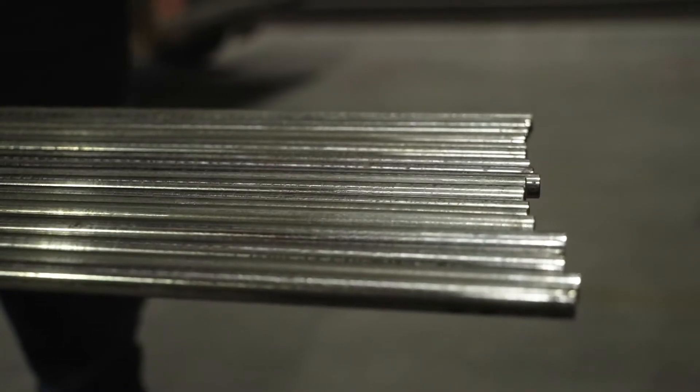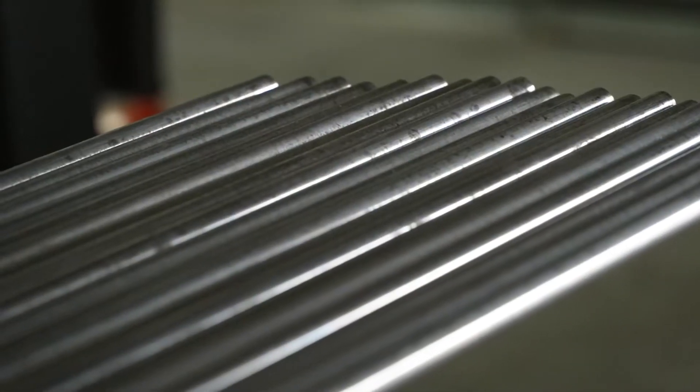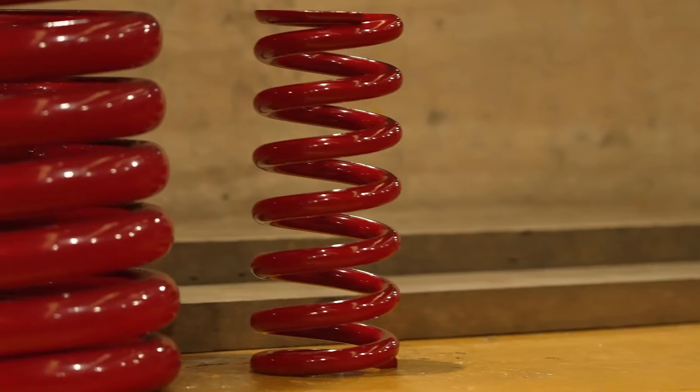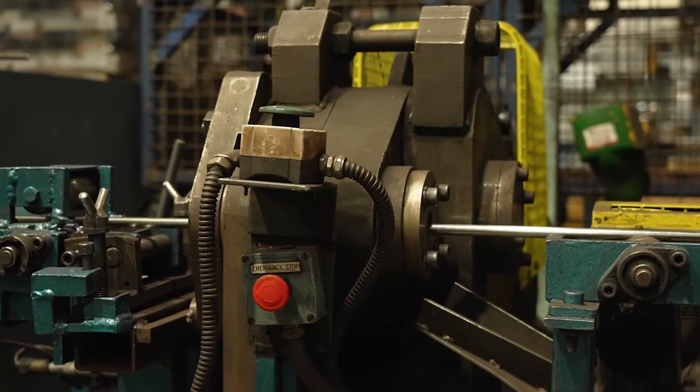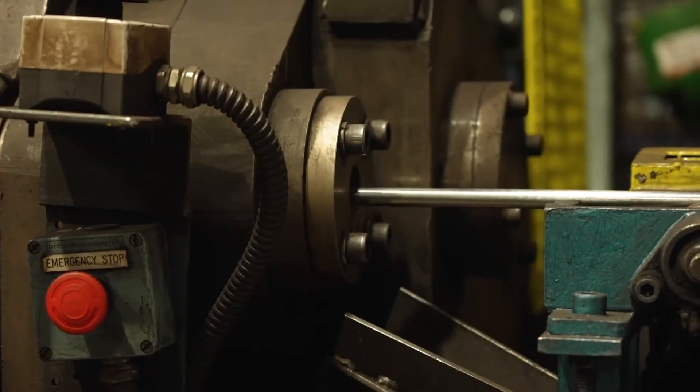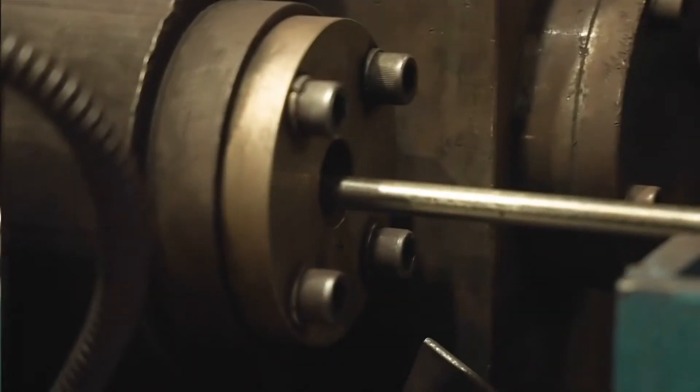But how does this piece of high quality high grade steel go from this to this? The first step is to cut the steel to a precise length, with every coil requiring its own unique sizing.